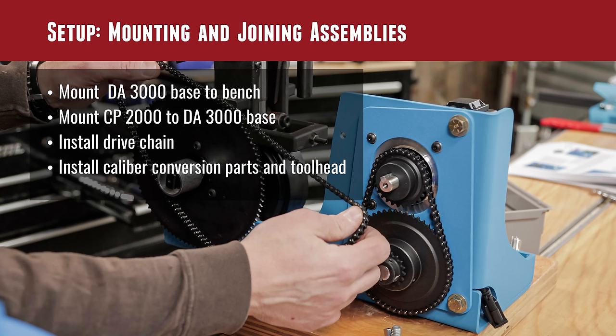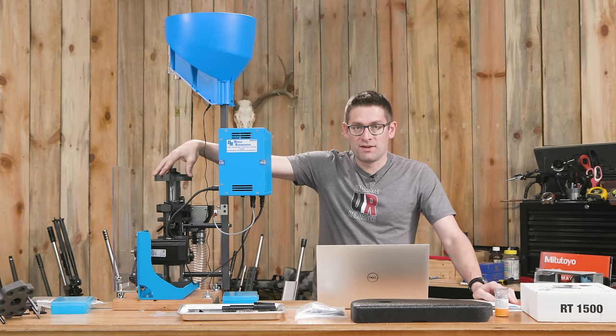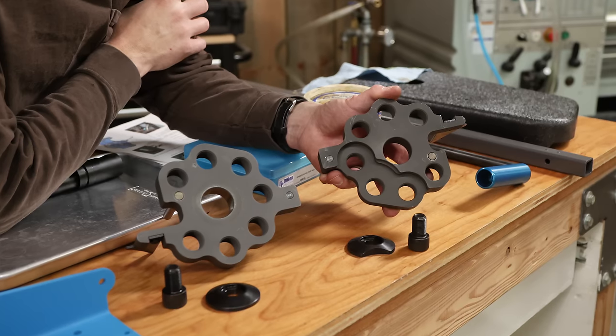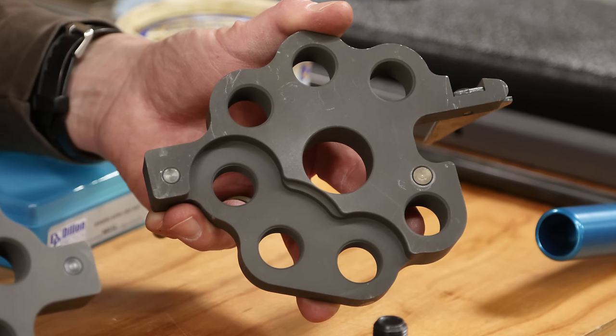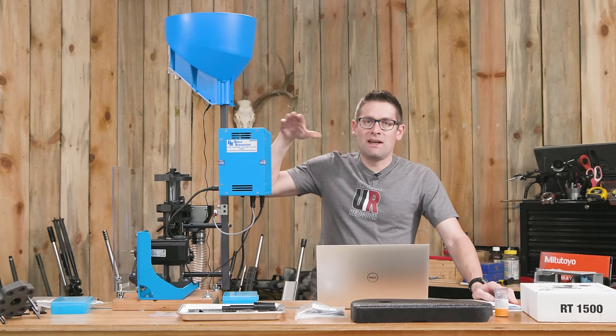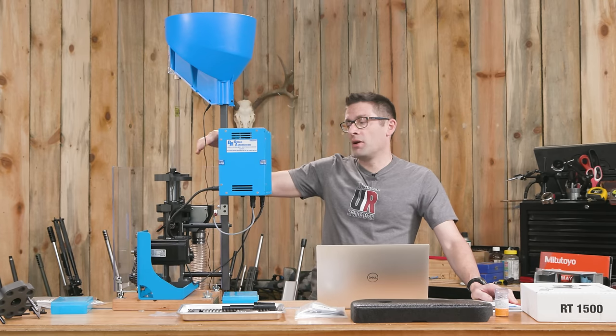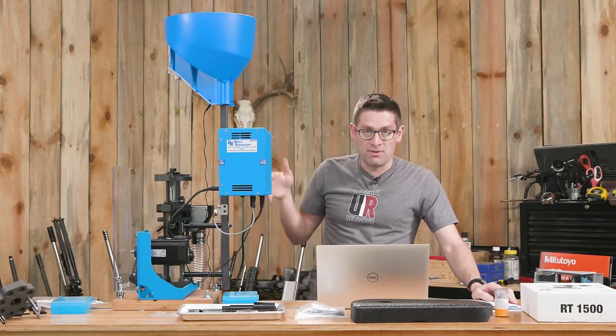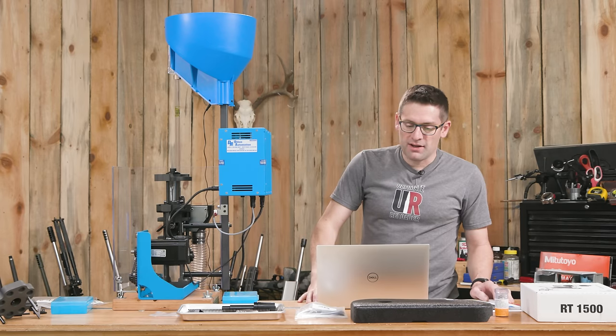And then I took a moment at this point to also install the rest of my caliber conversion parts. So it's my shell plate, the tool head, and this is a special tool head. This is the low cut tool head for 300 blackout trimming. You can see there's an entire kind of scalloped portion here with three die stations. We need to get that RT1500 down lower than what would be allowed on a regular RL1100 and CP2000 tool head. So that was a great time for me to get that installed.